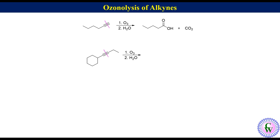Ozonolysis of but-1-yn-1-ylcyclohexane involving neutral workup. To get the structure of products, cut the molecule into two parts through the triple bond and convert each alkyne carbon to carboxylic acid. So the products will be cyclohexane carboxylic acid and propanoic acid.